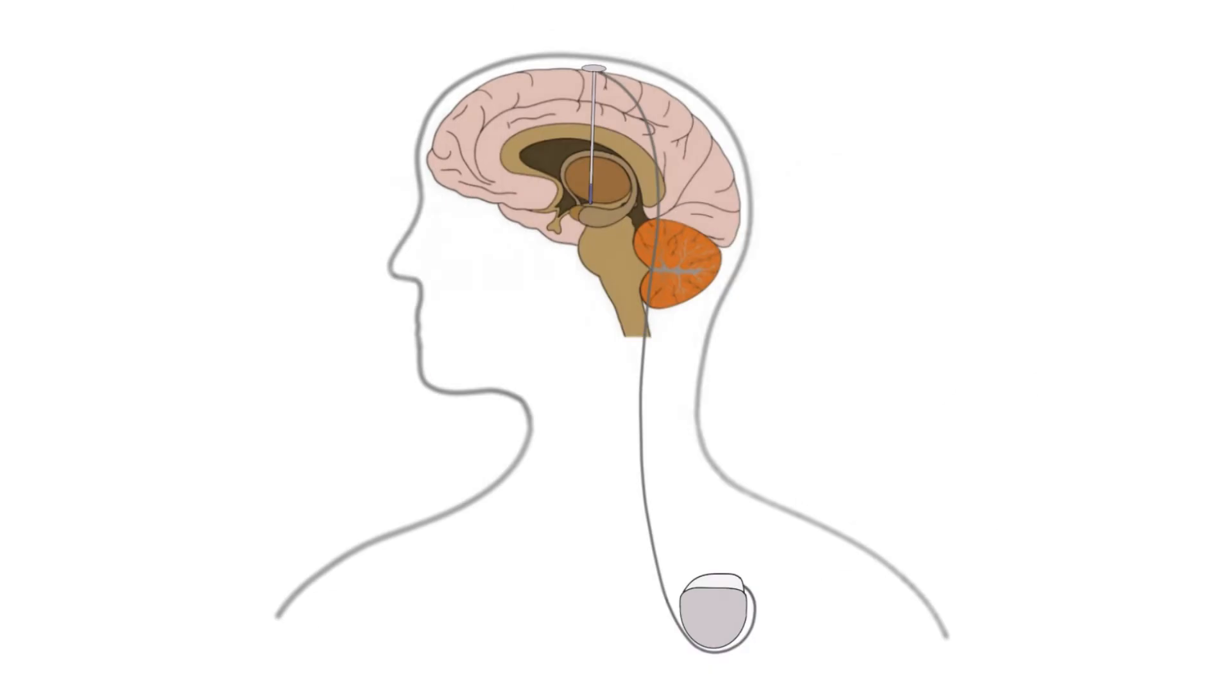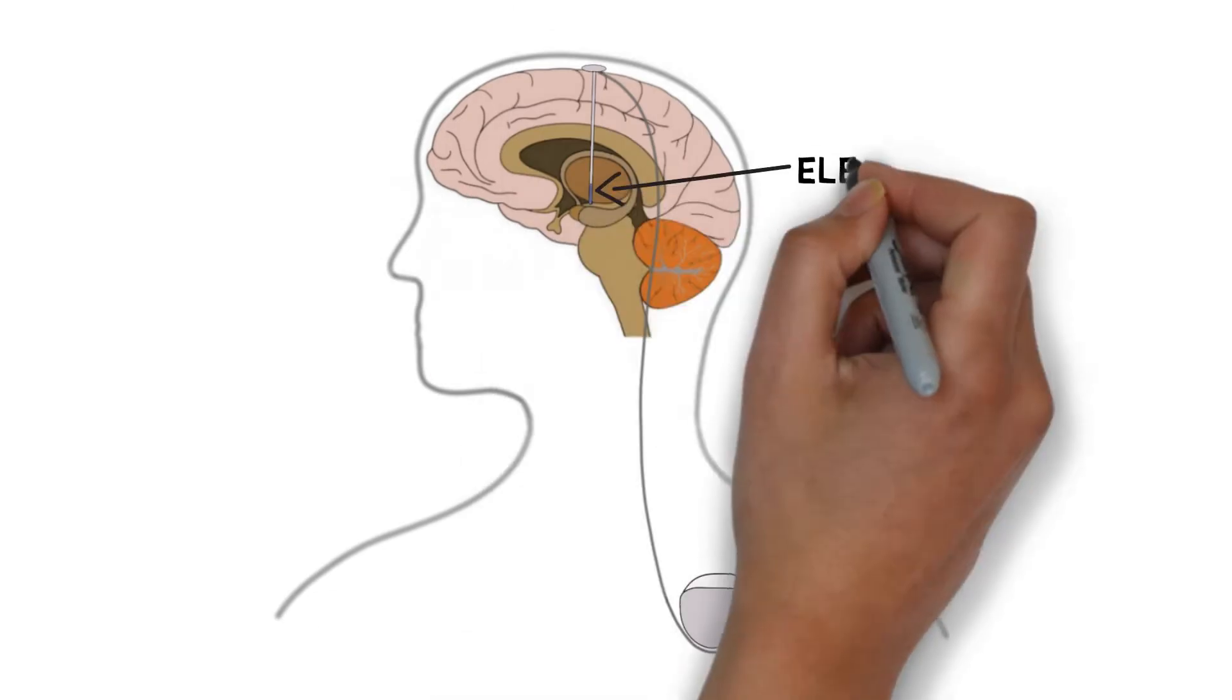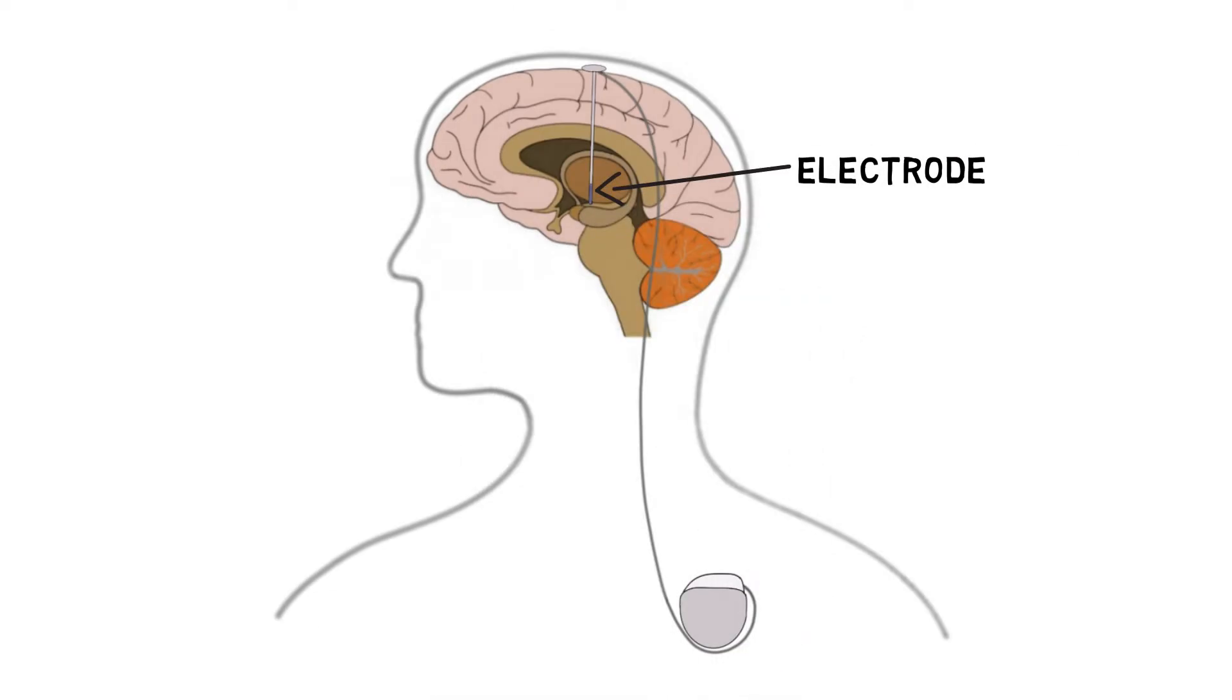Deep Brain Stimulation involves the insertion of an electrode into the brain. The electrode is connected to a wire that runs under the skin to a device called a pulse generator, which is usually implanted under the collarbone. When the pulse generator is turned on, it emits electrical impulses that alter neurofunctioning.